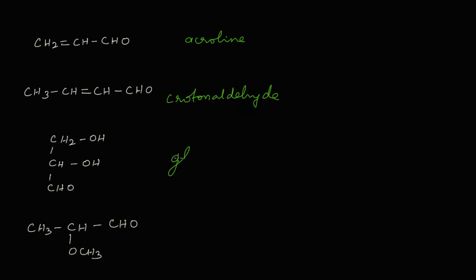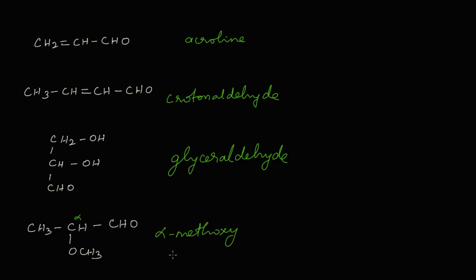The compound prepared from glycerol is known as glyceraldehyde. The next compound has a methoxy group attached at the alpha carbon — since the functional group is at the alpha carbon — so it is called alpha-methoxy propane aldehyde, as there are three carbons.